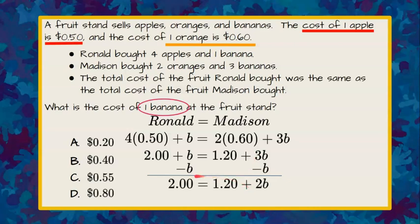Now we want to collect constants to the left because that's where our only constant is on this side. We're going to subtract $1.20 from each side of the equation. $2.00 subtract $1.20 is 80 cents, and that equals 2b. This is a zero pair, so we're left with 2b.